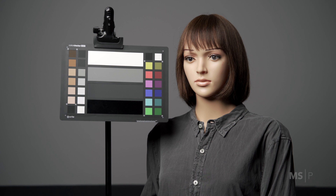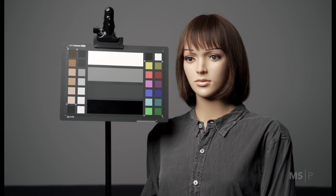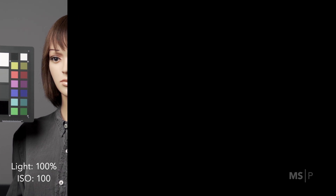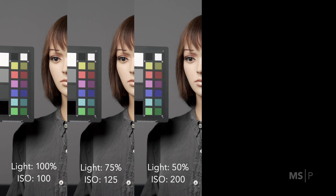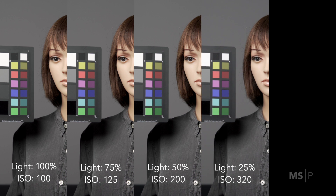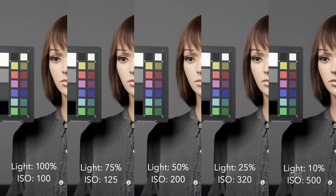Vicky does an excellent job of sitting still and allows us to get a really good comparison of different intensities and ISO settings. With the light at 100 percent, ISO sits firmly at 100. At 75 percent, ISO jumps to 125. At 50 percent, ISO is at 200. At 25 percent, ISO jumps to 320. And with the light at 10 percent of full output, ISO jumps to 500. Looking across all of these — which have been color corrected so the exposure swatches read at 100 and 0 — I see almost no variation to my eye.